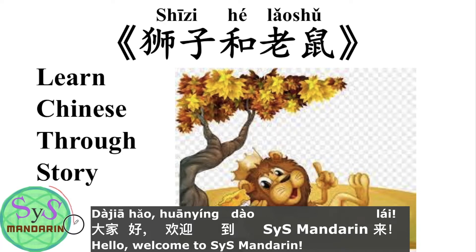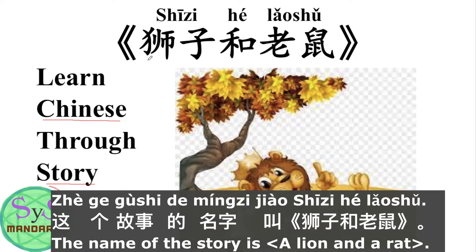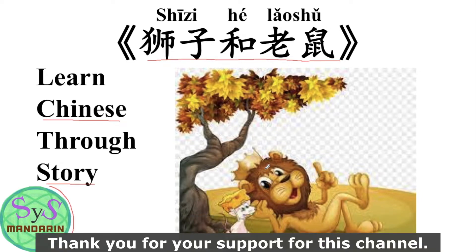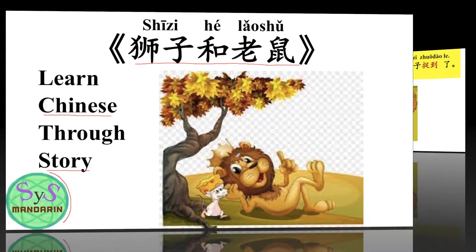大家好，欢迎到Sys Mandarin来。今天我们会讲一个中文故事。Today, we are going to tell a Chinese story. 这个故事的名字叫狮子和老鼠。A lion and a rat. Don't forget to subscribe, like, and click the notification bell for future videos. Thank you for your support for this channel. 好，那现在我们就开始吧。